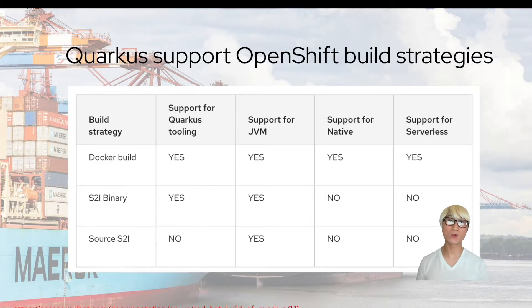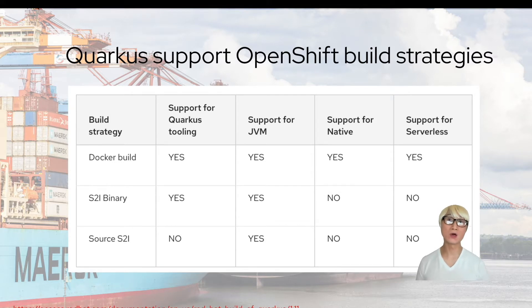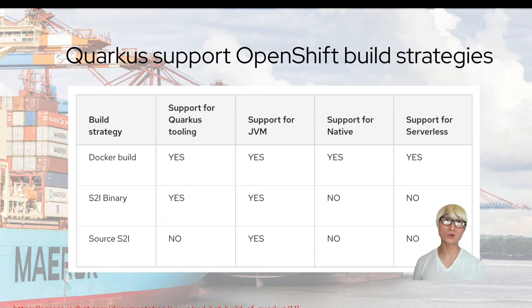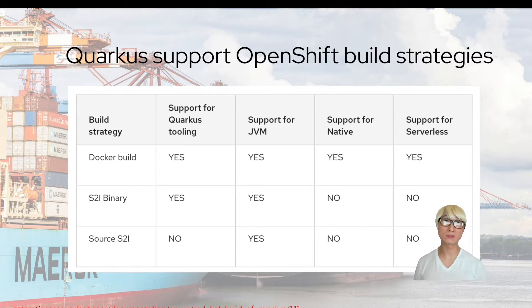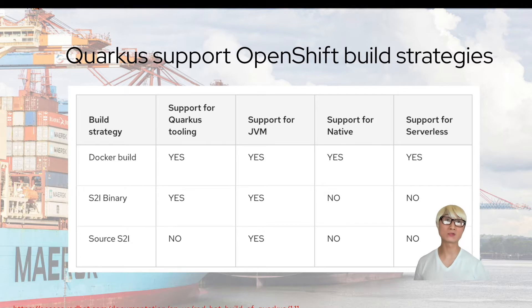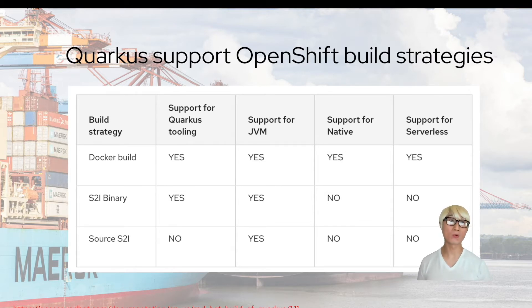Since Red Hat Build of Quarkus 1.11, the OpenShift Docker Build strategy is the preferred build strategy, which supports Quarkus applications targeted for JVM as well as Quarkus applications compiled to native executable. The S2I build strategy remains the default deployment strategy for backward compatibility reasons. You can configure the deployment strategy using the Quarkus OpenShift build strategy property in your application properties files. There are three basic strategies Quarkus supports in production, but most likely the Docker build strategy will support all use cases.